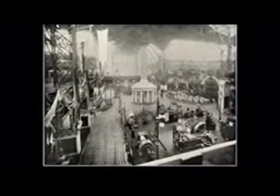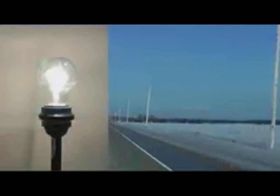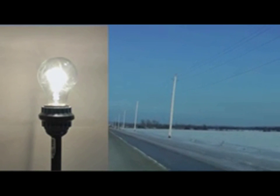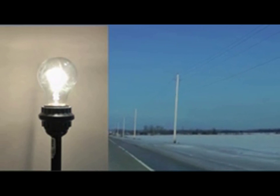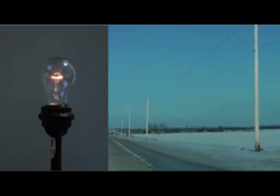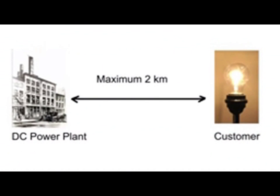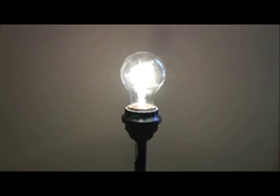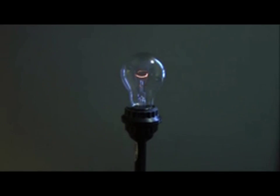Edison built hundreds of DC plants around the world, realizing there was a huge market for electric light. But there was one technical problem he had not resolved: electricity lost energy as it traveled through the wires. Once the wires from the generator exceeded two kilometers, there was not enough electrical energy left to turn on a light bulb — every customer had to be within two kilometers of the power plant. This was called line loss, a serious problem with no obvious solution.